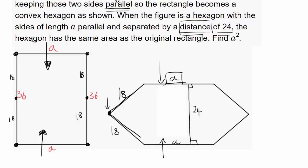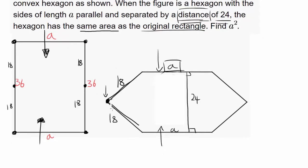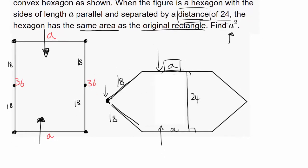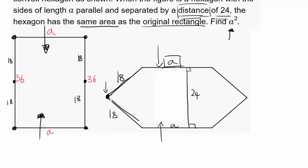So you know that's 24 and the hexagon has the same area as the original rectangle. Okay, that's an amazing thing to know. And we want to find A squared, where the area of the rectangle is 36 times A, base times height. And you know that's equal to area of the hexagon.